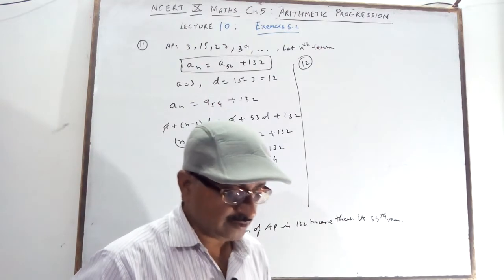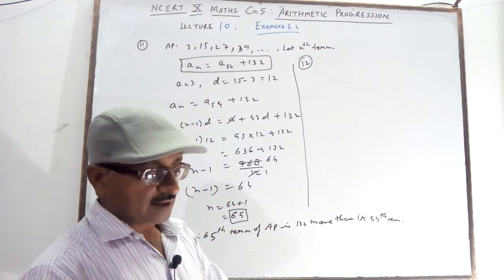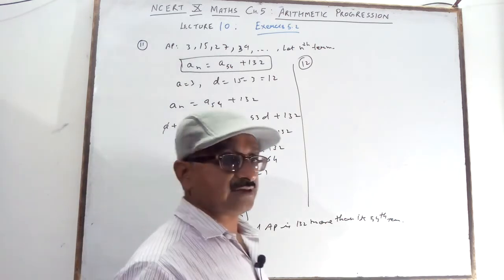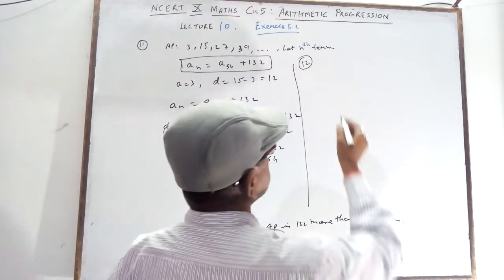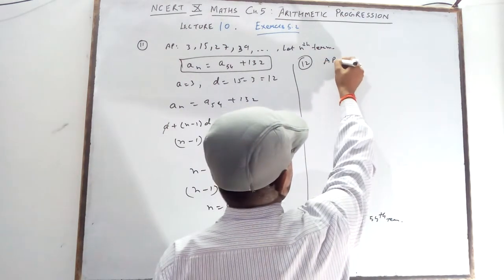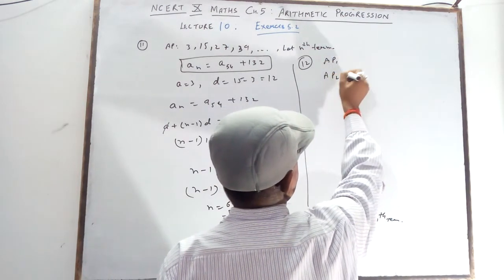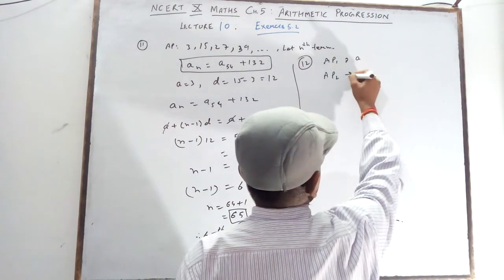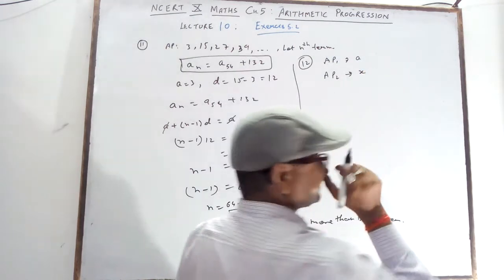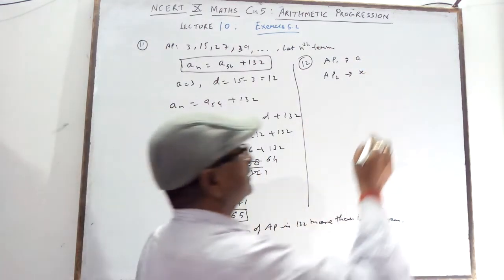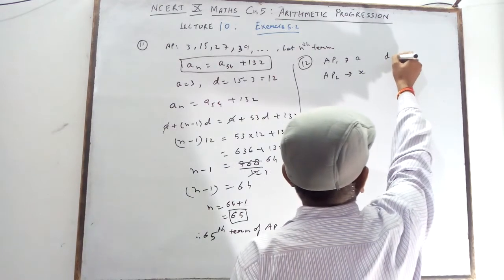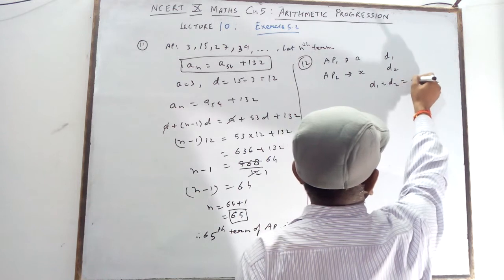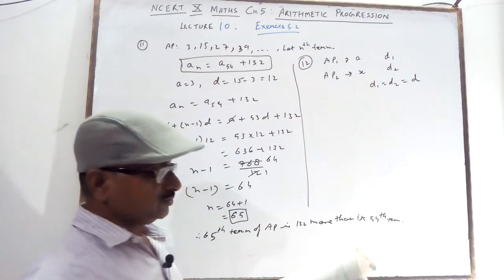In Question 12, two APs have the same common difference. Let AP1 have first term A and AP2 have first term X. Their common differences are D1 and D2, and D1 equals D2 equals D.